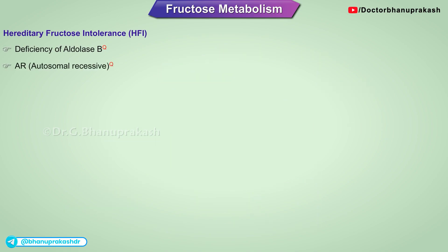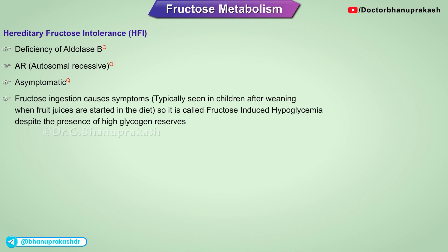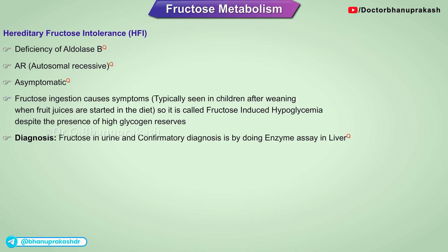Hereditary fructose intolerance involves a deficiency of aldolase B. It is autosomal recessive and asymptomatic at baseline, but fructose ingestion causes symptoms. Typically, a child presents after weaning when fruit juices are introduced into the diet. It is known as fructose-induced hypoglycemia despite the presence of high glycogen reserves. Diagnosis is made by detecting fructose in urine, with confirmatory diagnosis by enzyme assay in the liver.